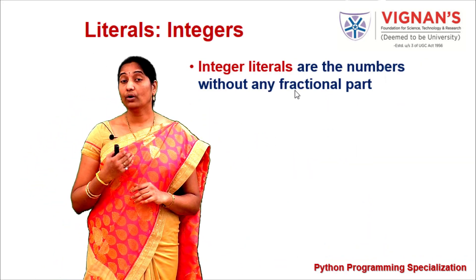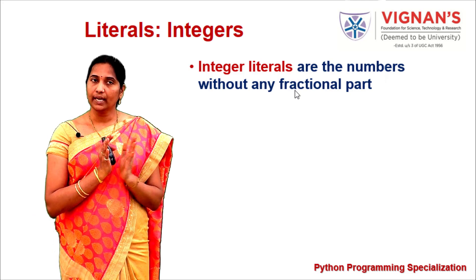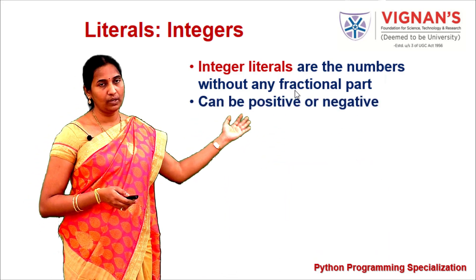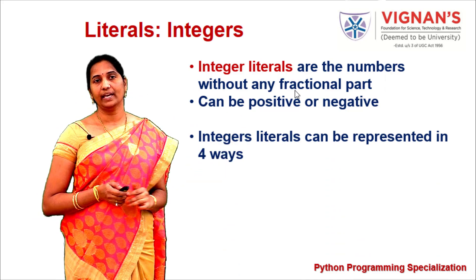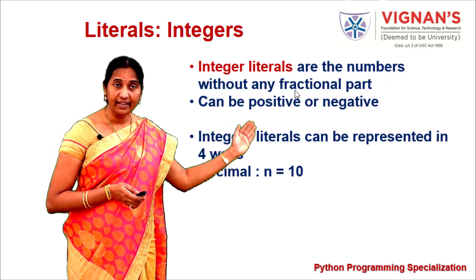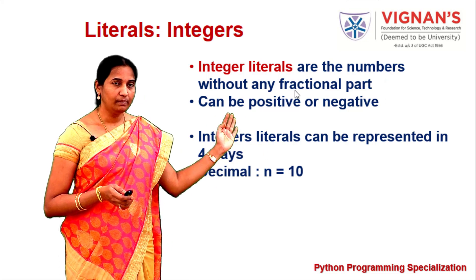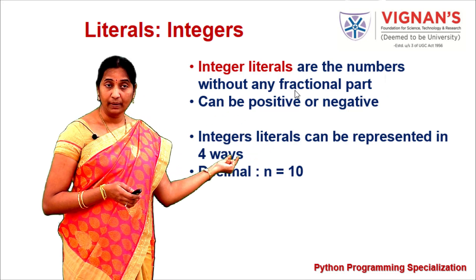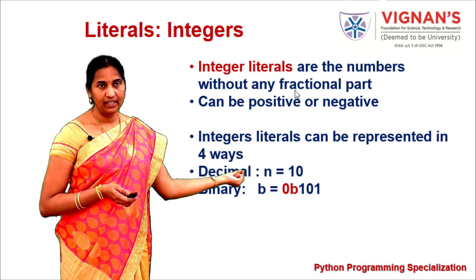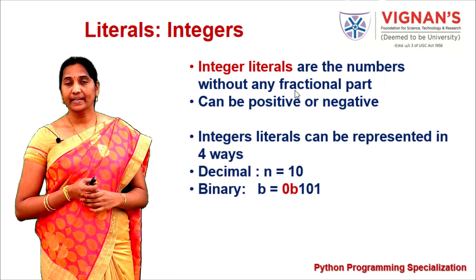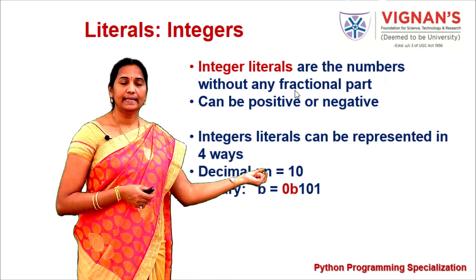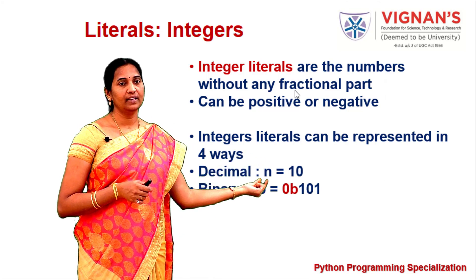Integer literals are numbers without any fractional part — positive or negative integers. Integer literals can be represented in four different ways: decimal integers are assigned directly (e.g., n = 10); binary numbers are prepended with 0b, so the variable b is assigned a binary value recognized by the 0b prefix.